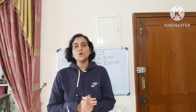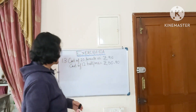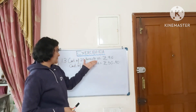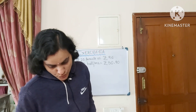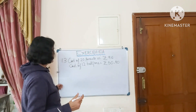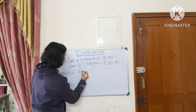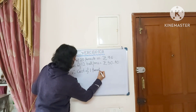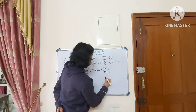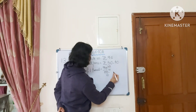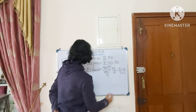First, we need to understand that a score is always 20 items, and 1 dozen is 12. So the cost of 20 pencils is given as Rs. 96 and the cost of 12 ball pens is Rs. 50.40. To find the ratio, we first find the cost of 1 pencil: 96 divided by 20 equals 48 by 10, which is Rs. 4.80.